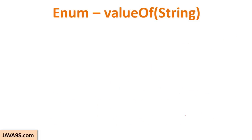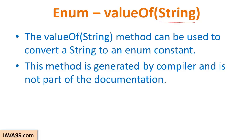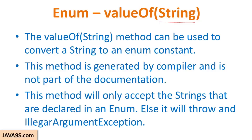Another method generated by the compiler is valueOf(String), which accepts a string. This method accepts a string and creates an enum object for you. If you know the name of the constant and pass it as a string, you will get that particular object. If you pass a string which is not part of the enum class, you will get an IllegalArgumentException.